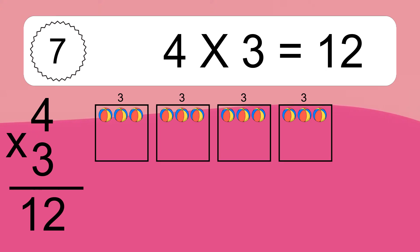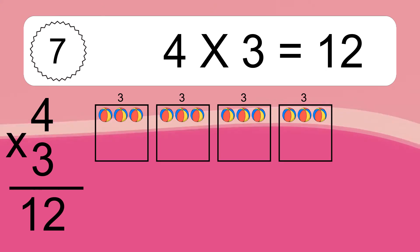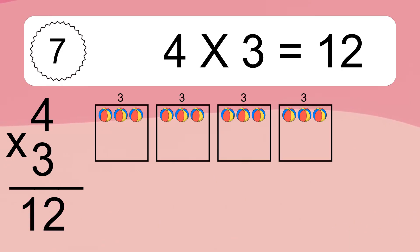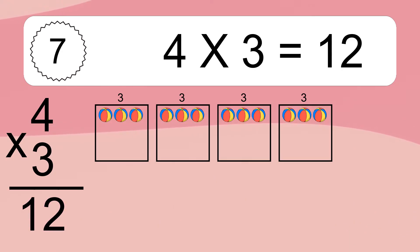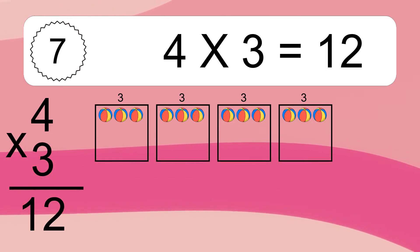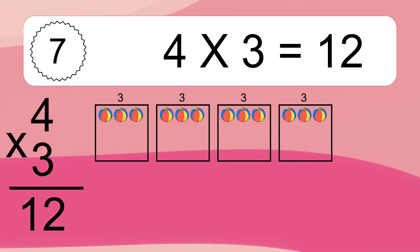4 times 3 equals what? 4 times 3 equals 12. We have 4 boxes, and each box has 3 colorful balls inside. If you count all the balls in all the boxes together, you will have 4 times 3 balls. This equals 12 balls.